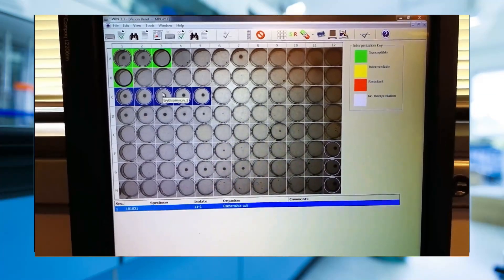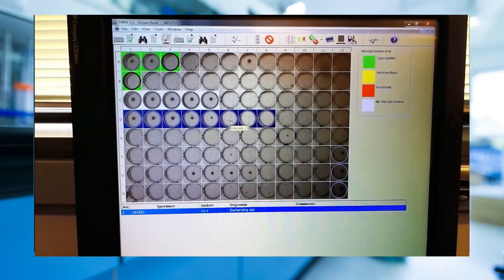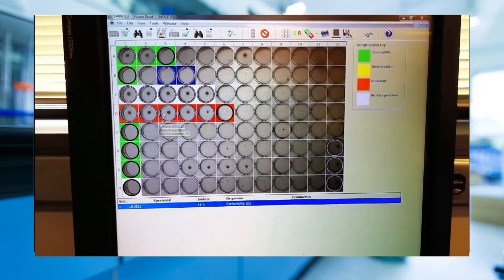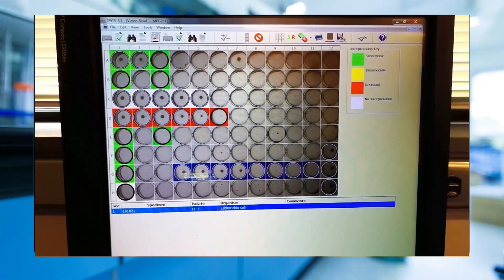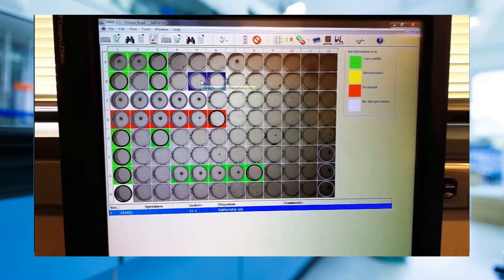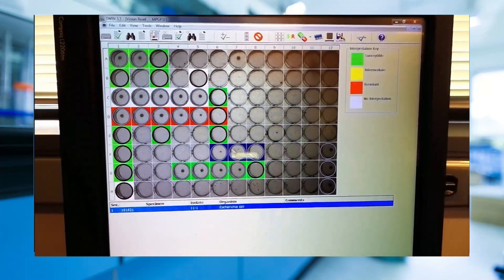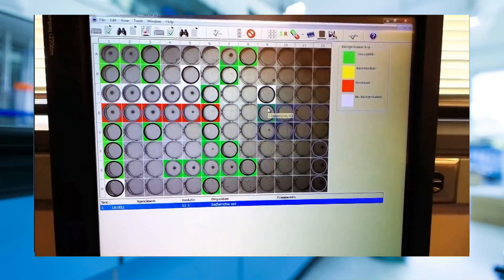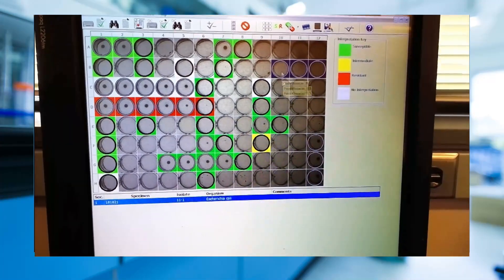Because each well has a conical shaped bottom, growth tends to collect in the center of each well and appears as a dot, also commonly referred to as a button. Everywhere you see a dot, that is bacterial growth in that well. The technician will manually select the minimum inhibitory concentration as the first well of each drug with no button or at least an 80% reduction in growth.